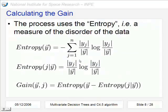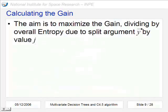The way to calculate the gain uses the entropy, that is a measure of the disorder of the data. Here is the entropy of an instance set, considering some class. And here is the gain, considering an instance set and a class. The aim of this calculation is to maximize the gain when we divide the overall entropy, splitting this argument by this value.